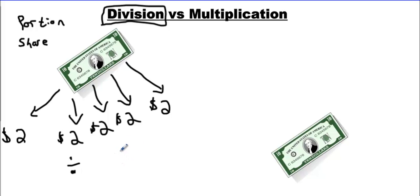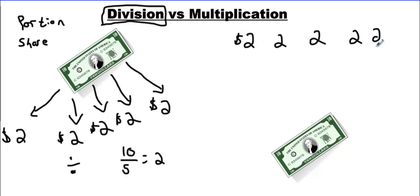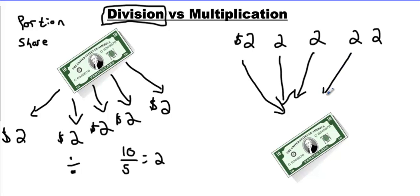Sometimes division looks like a fraction. This here would be 10 divided by 5. It looks like a fraction and it is, because fractions indicate the process of division. So this would be 10 divided by 5, which is $2 each. Now if I reverse this process and each of these five people who have $2 put their money together, you're going to get $10. One way is to go 2 plus 2 plus 2 plus 2 plus 2, five times. Or you can just say 5 times 2, and that's going to make 10.